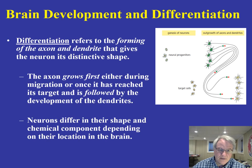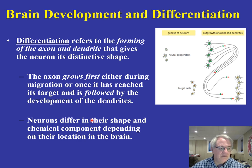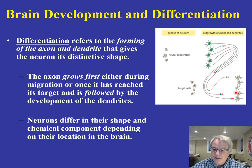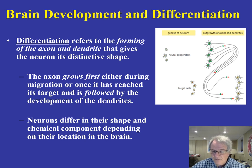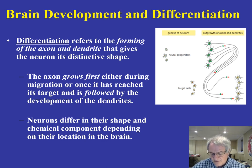Differentiation involves the formation of the axon and dendrites. This genesis occurs by way of neural progenitors, which start to grow axons and dendrites that end up in target cells. The axon first grows during migration, and once it reaches its target areas, it begins to develop dendrites. Neurons are dramatically different in shape and chemical composition depending on their location in the brain.